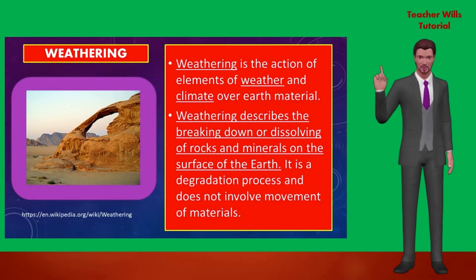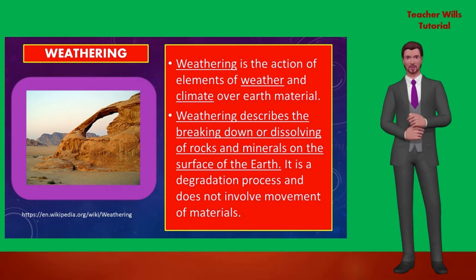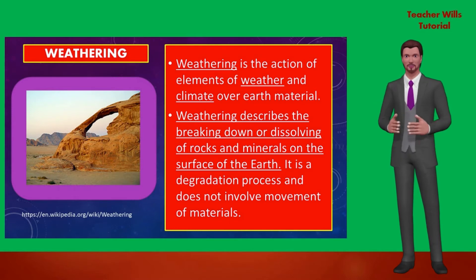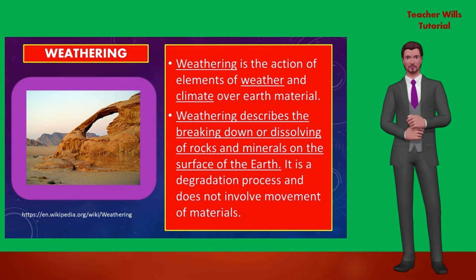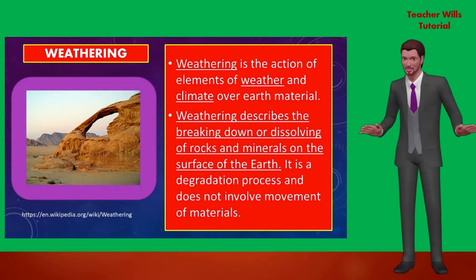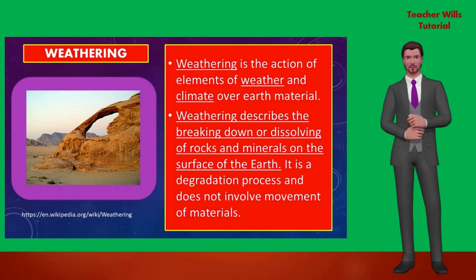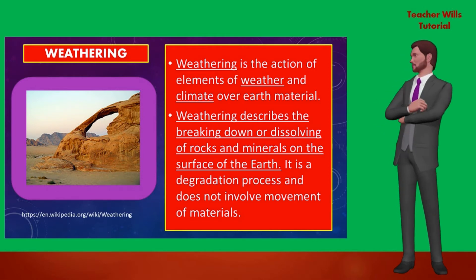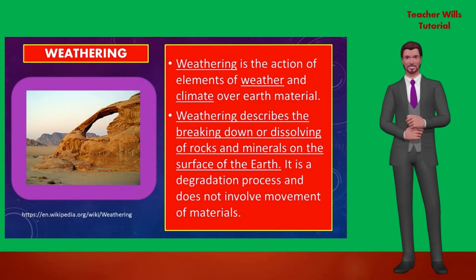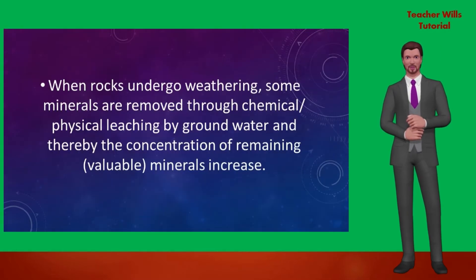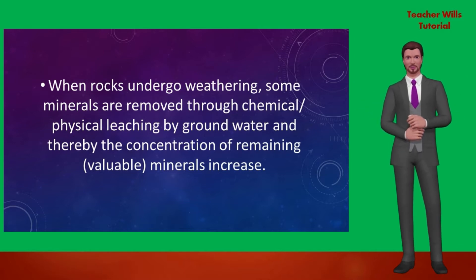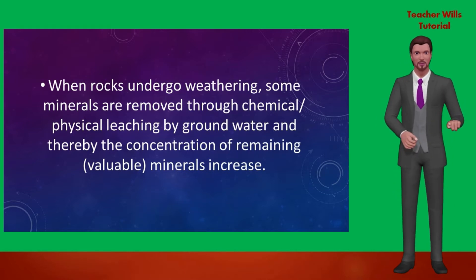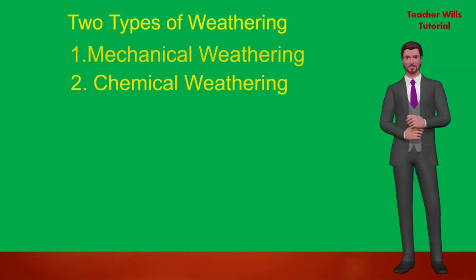One of the exogenic processes is weathering. Weathering is the action of elements of weather and climate over Earth material — the breaking down or dissolving of rocks and minerals on the surface of the Earth. It is a degradation process and does not involve movement of materials. It can be defined as mechanical disintegration and chemical decomposition of rocks. There are two types of weathering: mechanical weathering, also known as physical weathering, and chemical weathering.